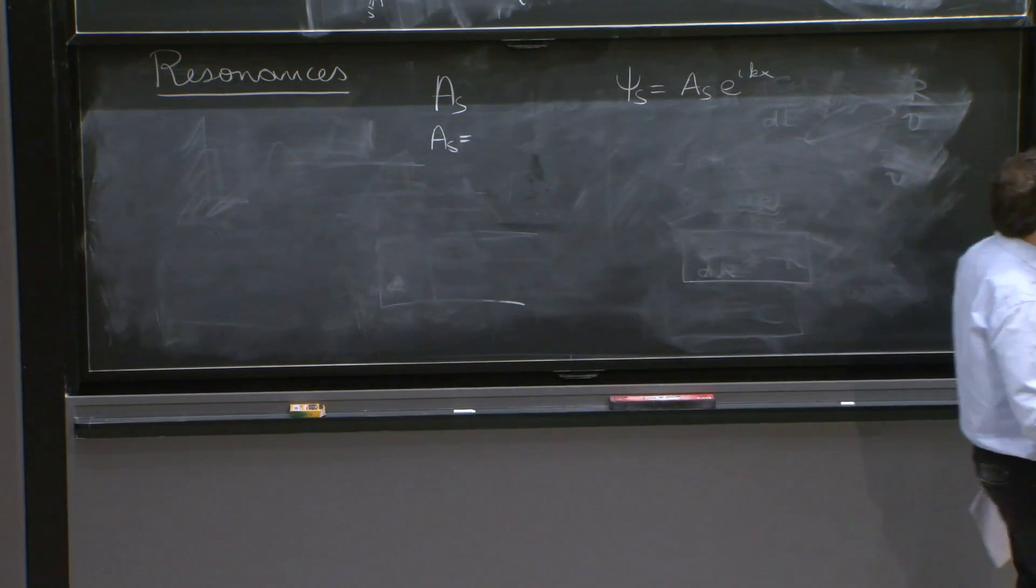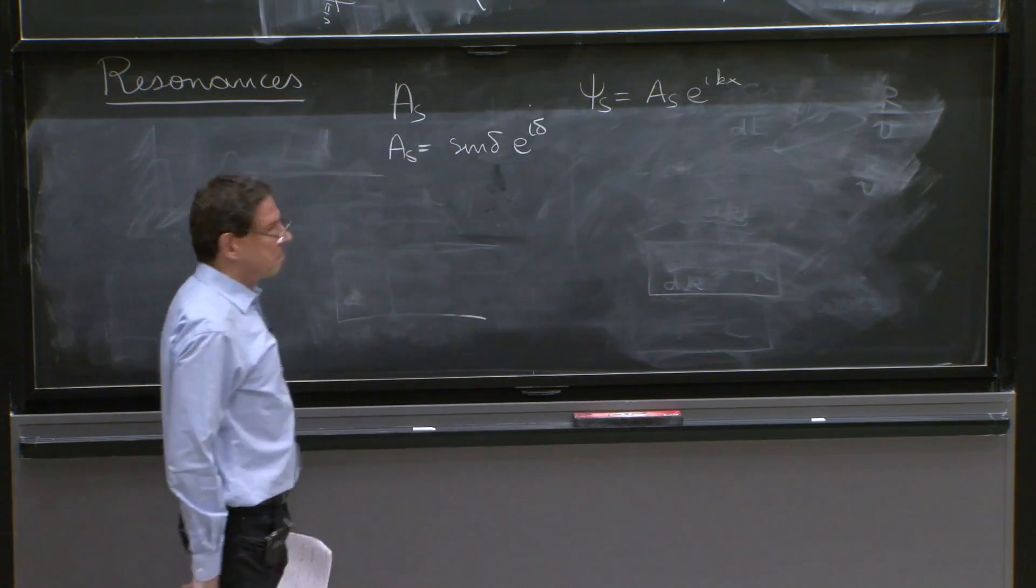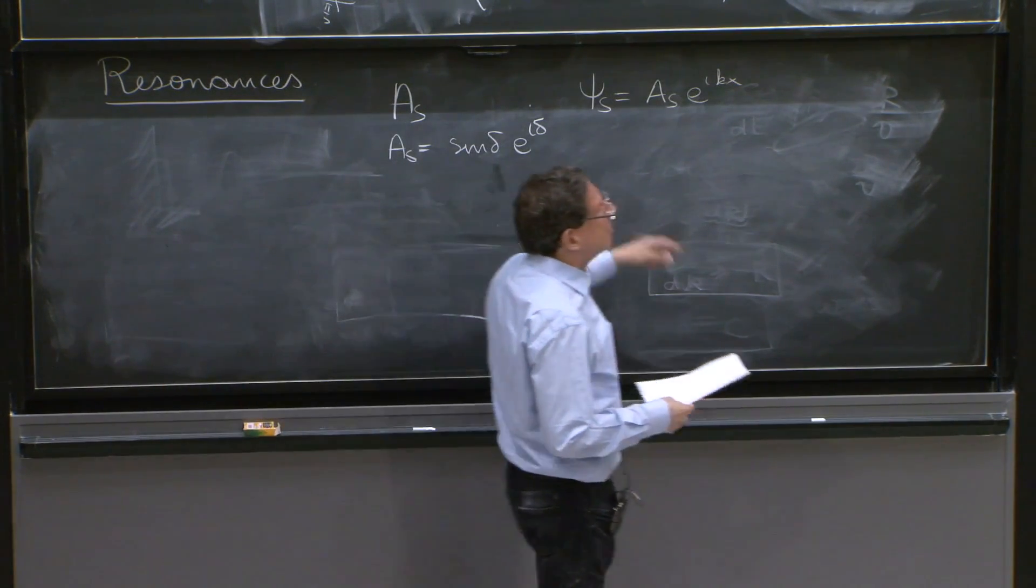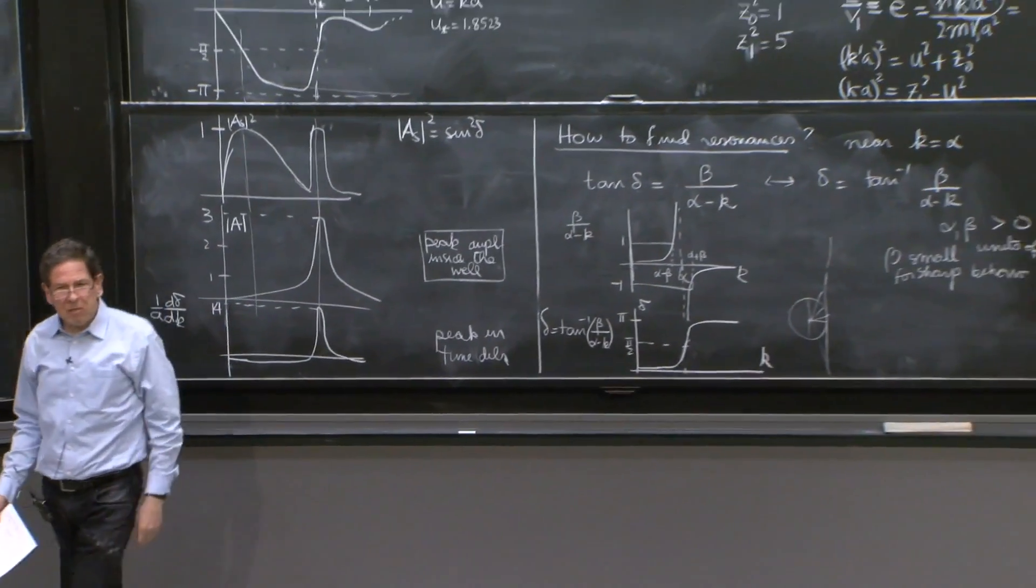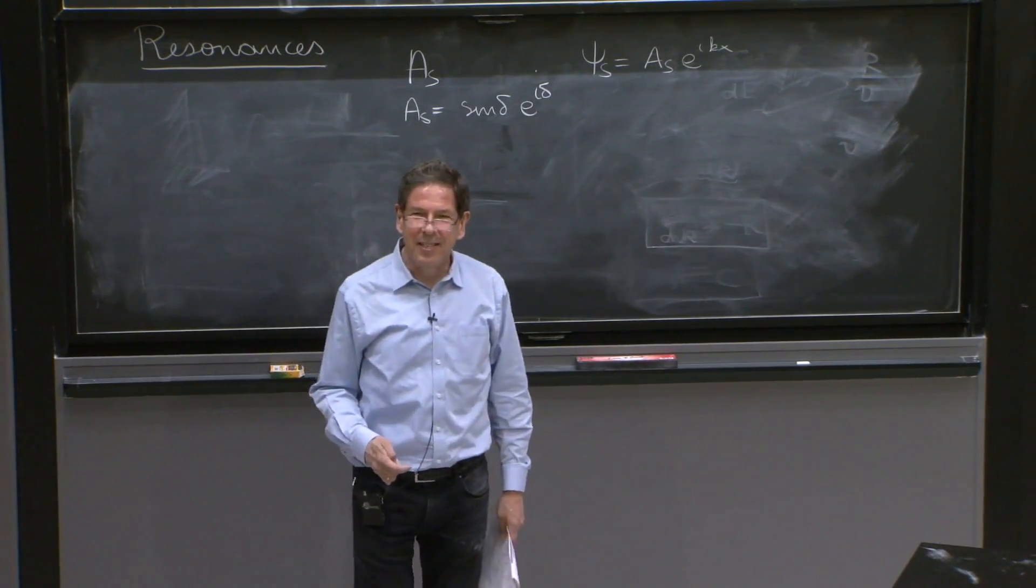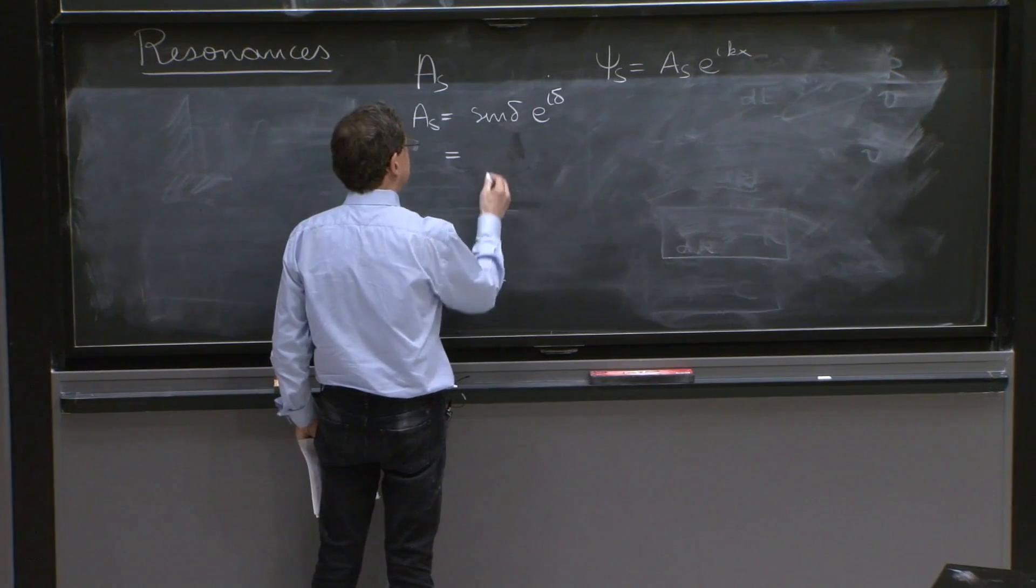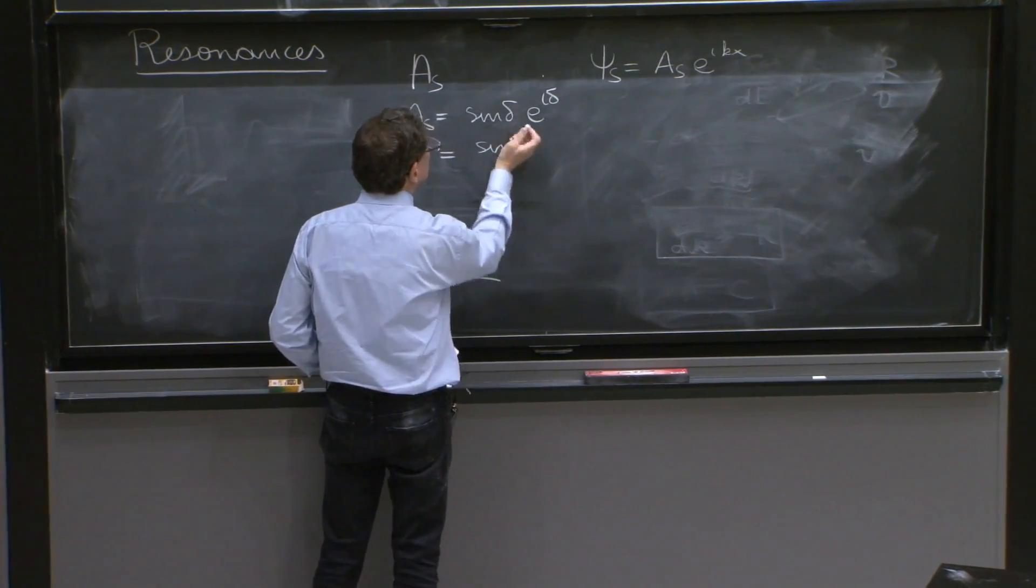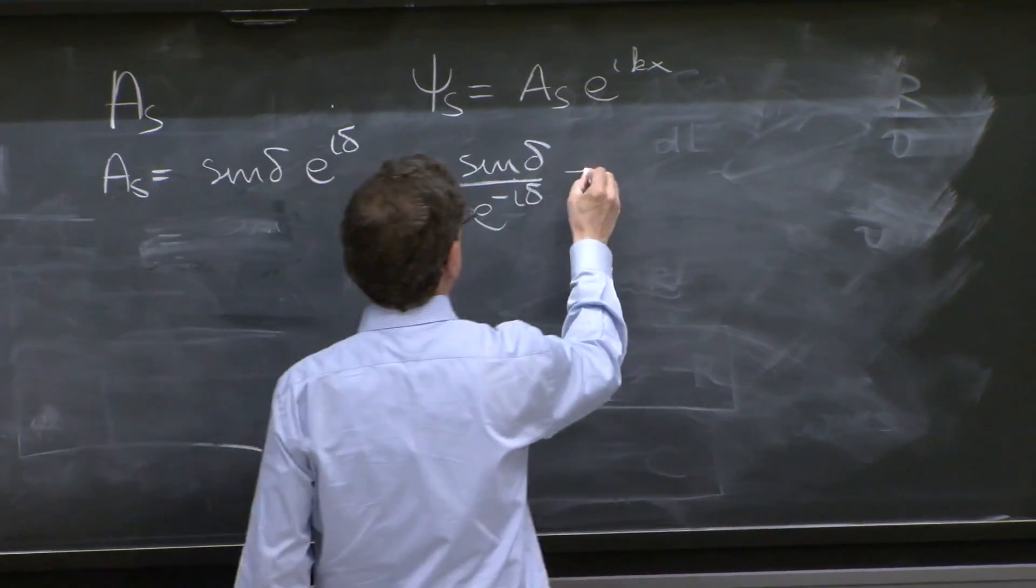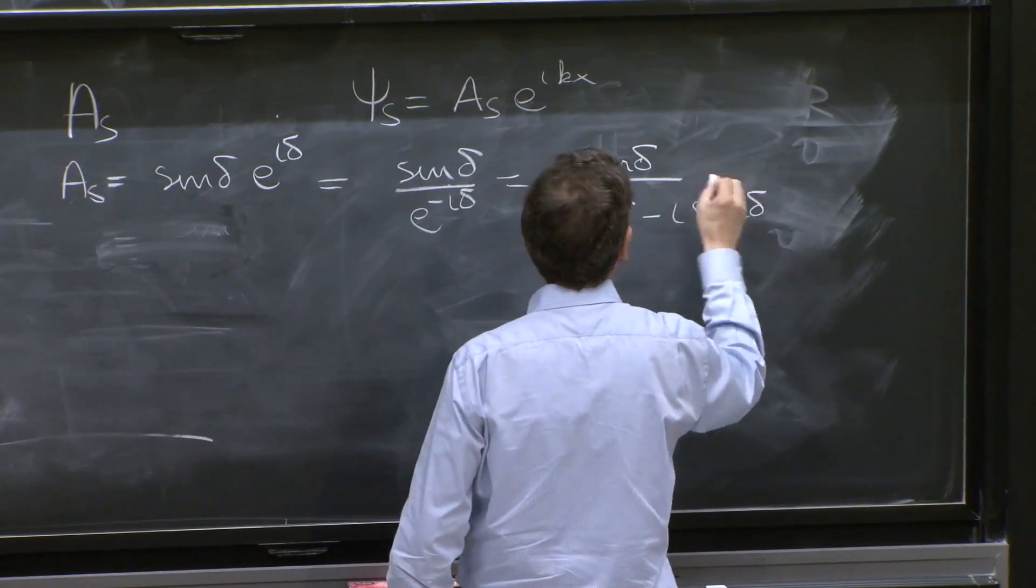Well, As squared is sine squared delta. So if you remember, this was sine delta e^(i delta). So let's stick to that and try to write it in a funny way. Certainly, As is becoming large near resonance. So let's think when As becomes large. Well, in another way, let's be a little creative about things. It's good sometimes not to be too logical. So let's write this as sine delta over e^(-i delta). And that's sine delta over cos delta minus i sine delta. That's all good.